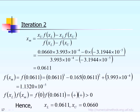So we go to iteration 2, and we calculate the next predicted root XM again using the same formula. The only thing different is now for X upper bound, we have to use the new value, which is 0.066. So based on that, the XM new predicted root is equal to 0.0611.